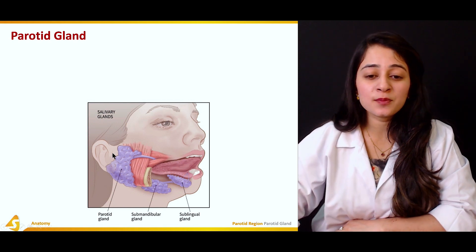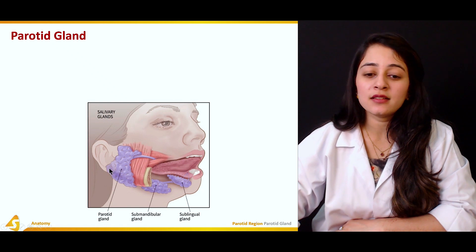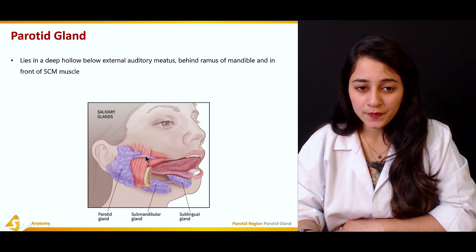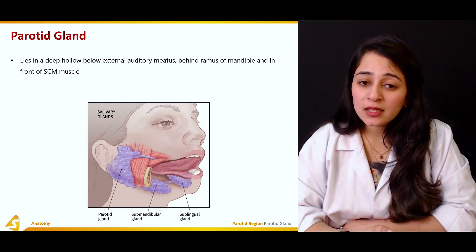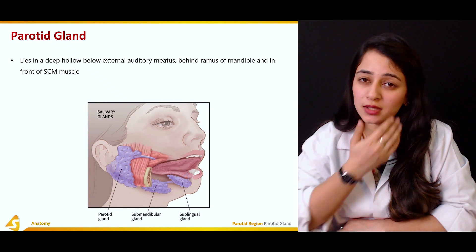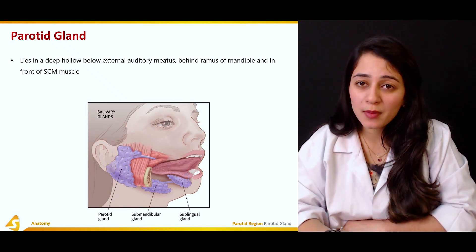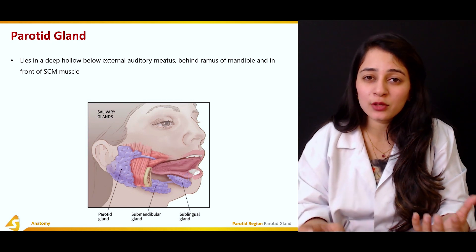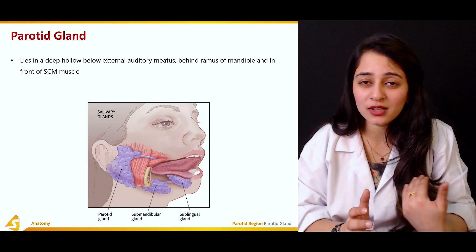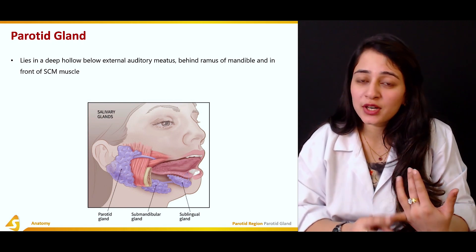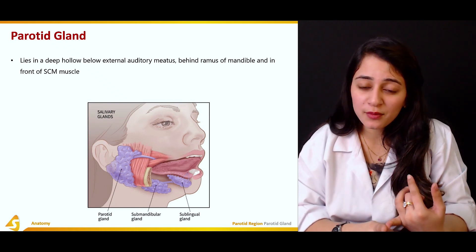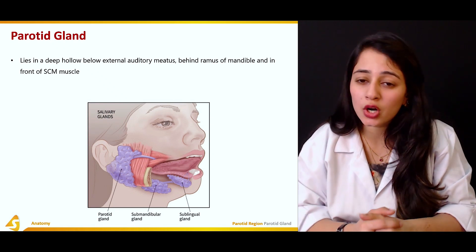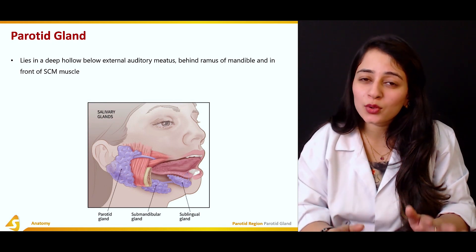The purple color shown here is the parotid gland, and this is the Stensen's duct or parotid duct. This parotid gland lies in a deep hollow below the external auditory meatus — which is the meatus of the ear — behind the ramus of the mandible, and in front of the sternocleidomastoid muscle. It is present on the posterolateral side of the face.